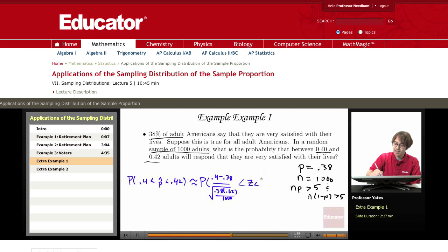And then over here, we have 0.42 minus 0.38 over the square root of 0.38, 0.62 over 1,000. This then equals 1.30. I have my z here, and I have 2.61.